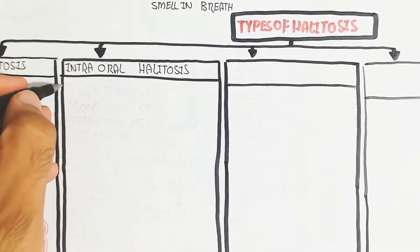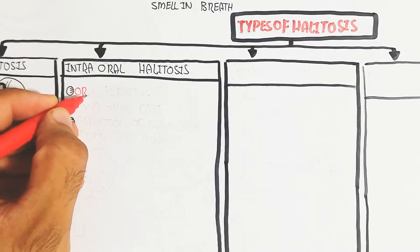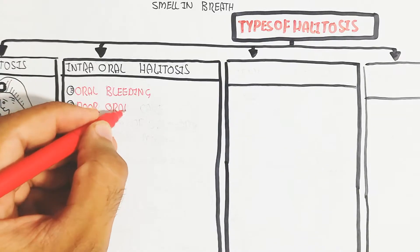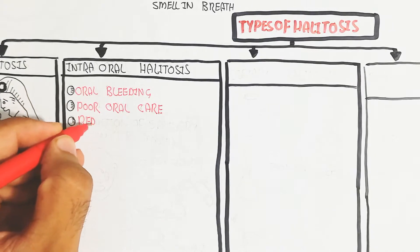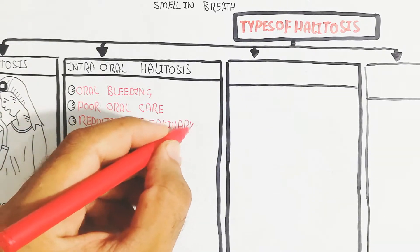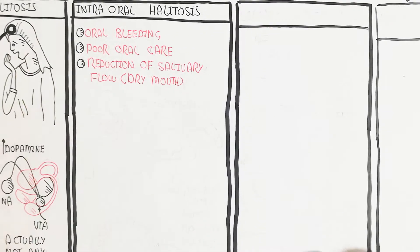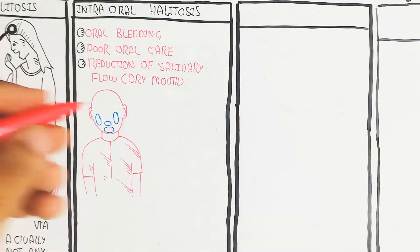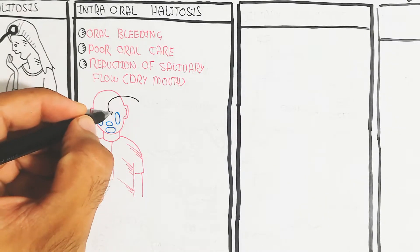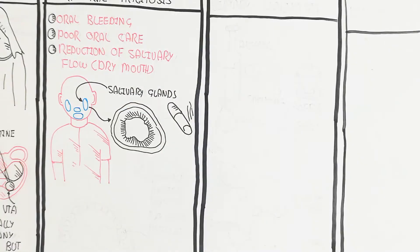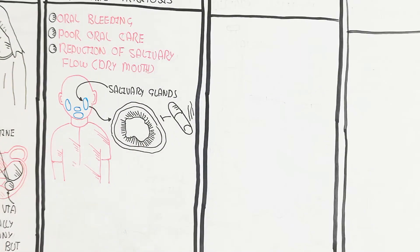On the other hand, intraoral Halitosis - intra means inside, oral means the oral cavity. Intraoral Halitosis includes oral bleeding, poor oral care, and reduction of salivary flow, known as dry mouth. The salivary gland is responsible for the production of water and other fluids.